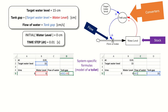The converters are informational — not strictly necessary, but they make things more readable. Their main role is converting from one quantity to another, for example water level in centimeters to flow of water in centimeters per second. A converter provides the explicit formula for that conversion. I could connect directly from stock to flow, but the converter makes the relationship easier to understand for the reader.